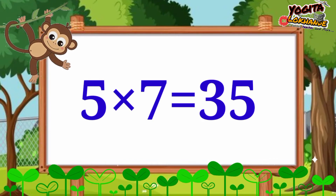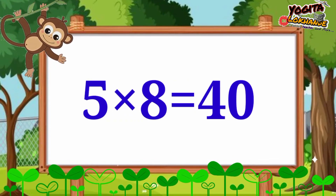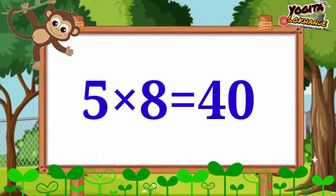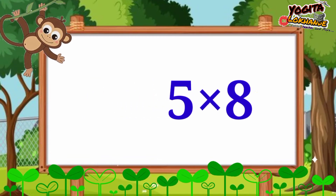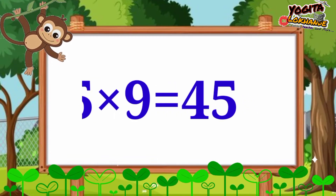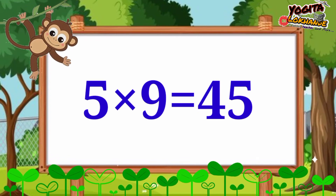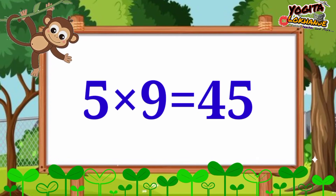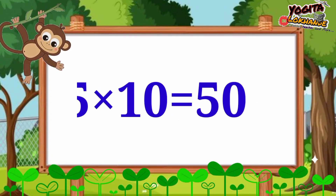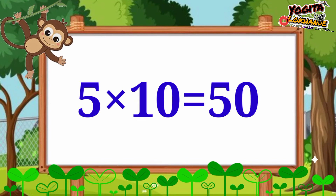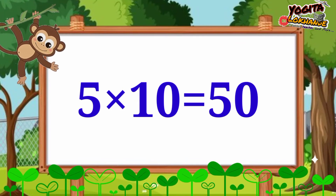Five eights are forty. Five nines are forty-five. Five tens are fifty. Bye-bye.